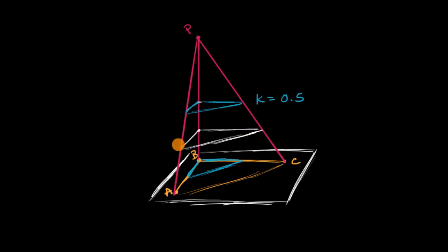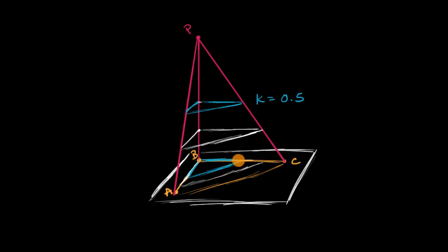Now if we were to translate that down onto our original surface, what would that look like? Well, it would look like a dilation of our original triangle centered at point B, but this time with a scale factor of 0.75.